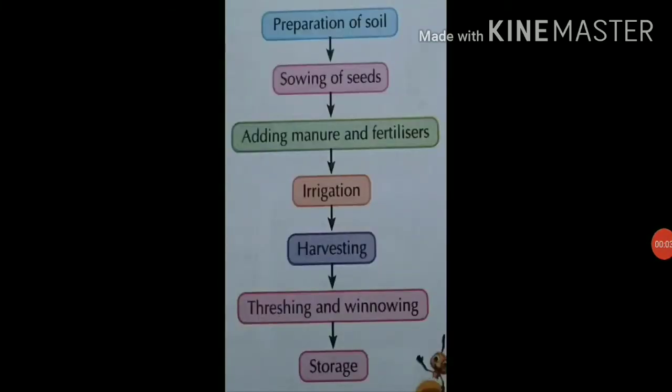Let's see the steps of crop production: preparation of soil, sowing of seeds, adding manure and fertilizers, irrigation, harvesting, threshing and winnowing, and storage. In the last video we completed preparation of soil and sowing of seeds. Now in this video we are going to read about the other different steps of crop production.